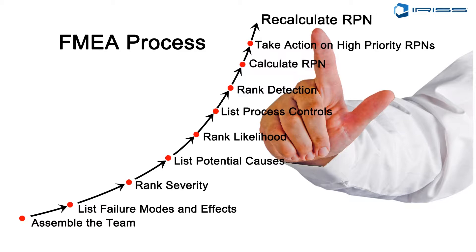You then look at the potential causes of failure and rank the likelihood of those causes, and then start thinking about process controls — ways and means by which you could prevent those failures from occurring, or detect early warning signs of impending failure, and then take corrective action. The FMEA process helps you calculate the RPN number so you can make better decisions about where to invest your time and energy on the most critical assets, and think about what means could be used to prevent, predict, and correct possible failures in a more timely fashion.